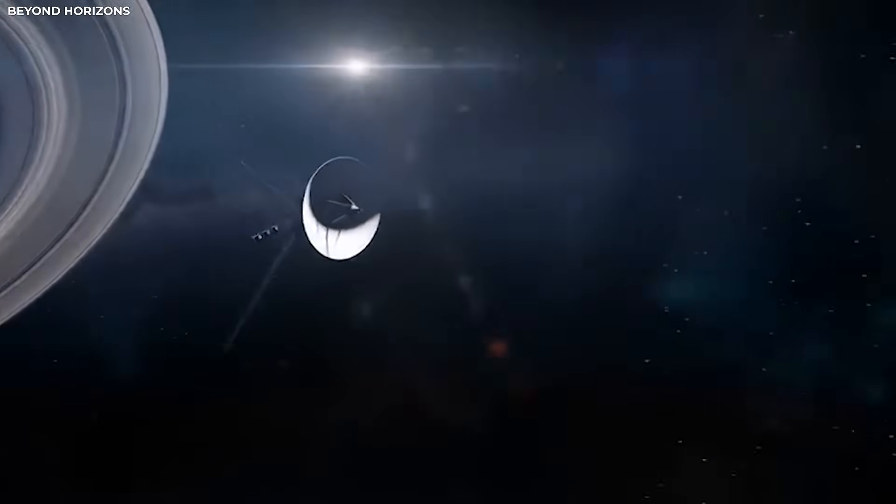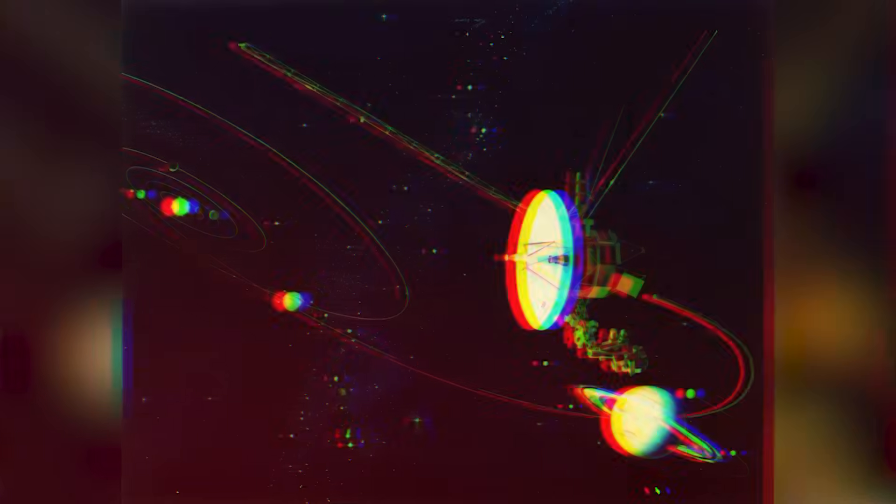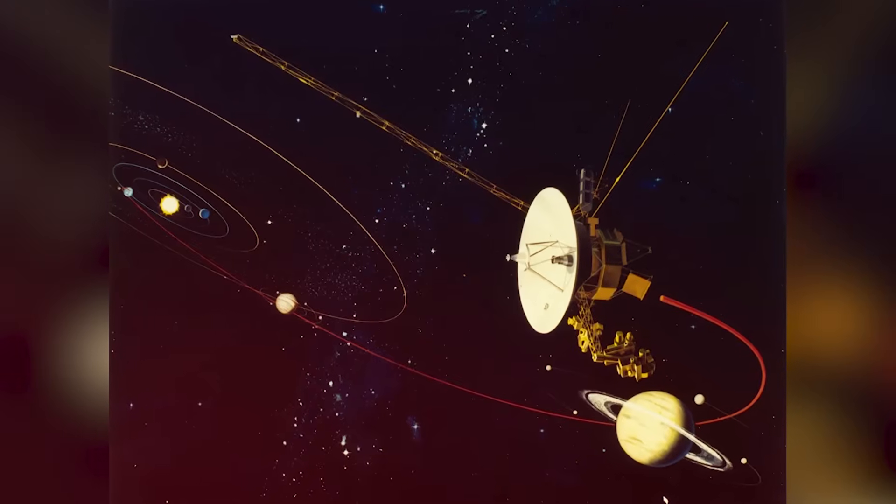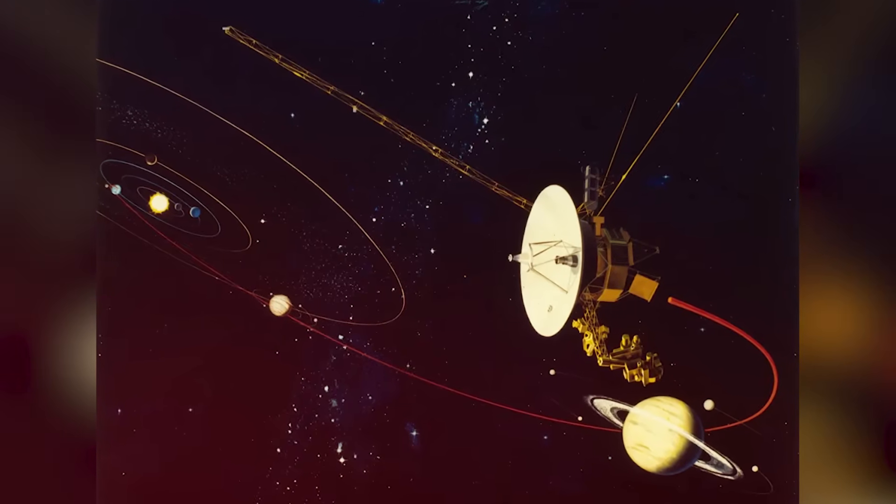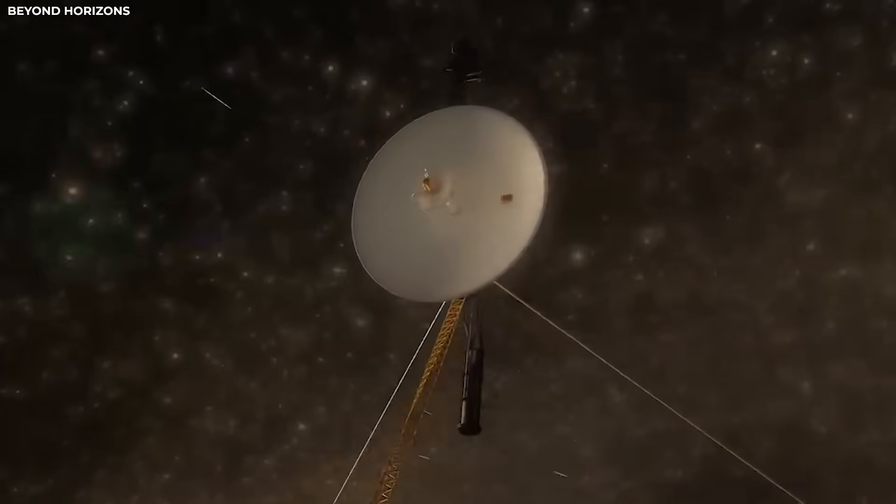Even though the signal was faint, it had a clear and steady pattern. That's rare. Signals usually break down over long distances, especially over 12 billion miles. But not this one. It held strong, like it had something to say.